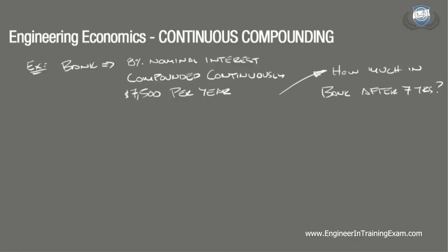So here's the solution. The goal is to determine how much money will be in the savings account in the future after depositing $7,500 annually over a seven-year period. The problem states that this is a continuous compounding problem. With that, we need to automatically remember that any interest rate that is compounded more than once in a year must be converted from a nominal rate into an annual effective rate.